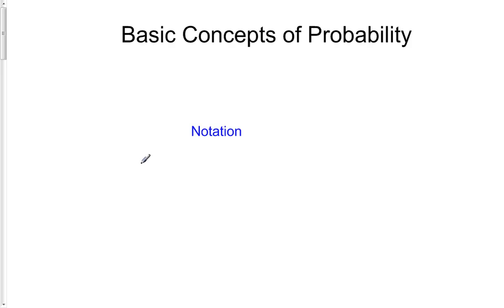So now let's talk about some of the basic notation of probability. The first thing I want to talk about as far as notation is concerned is uppercase P. And uppercase P is the name of the probability function.